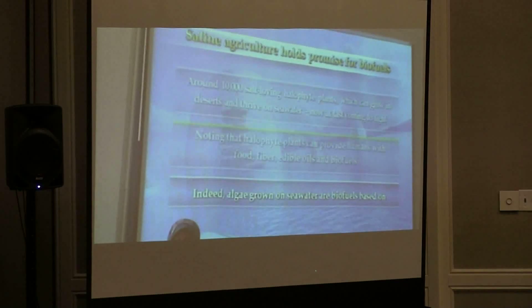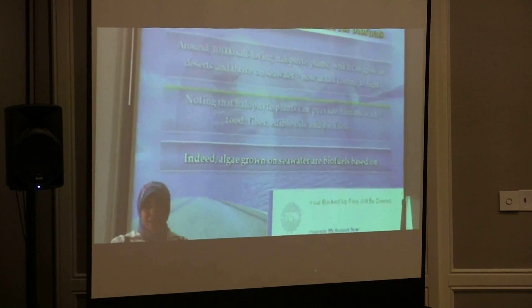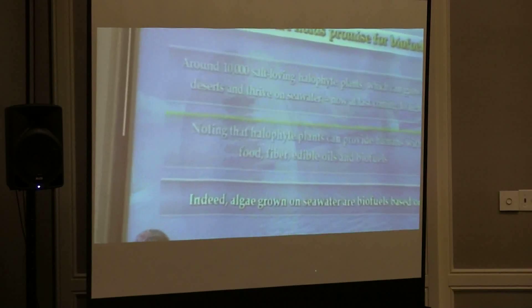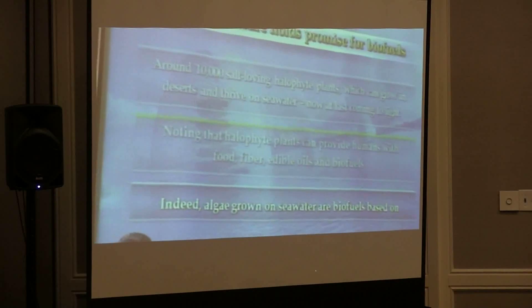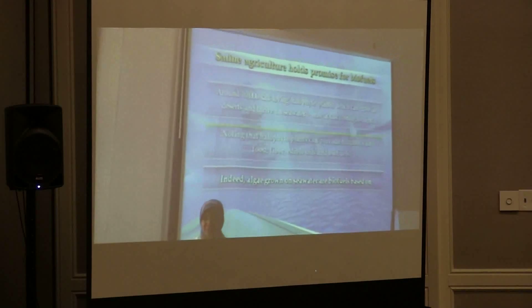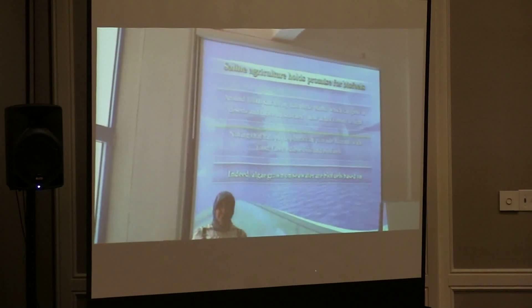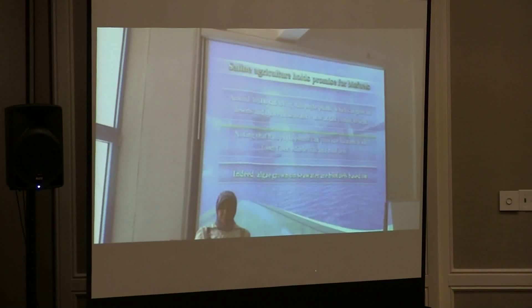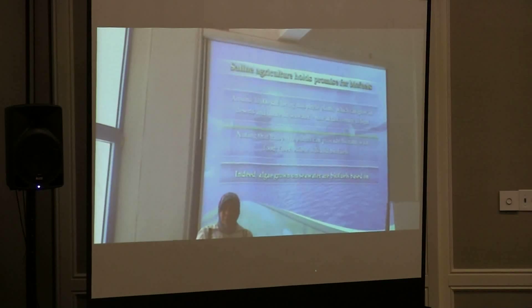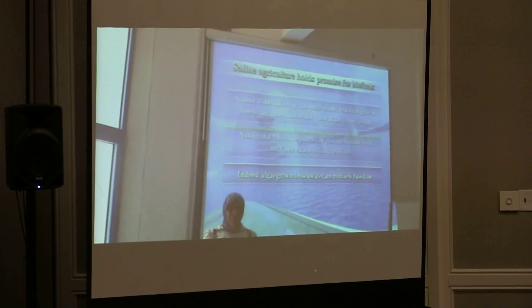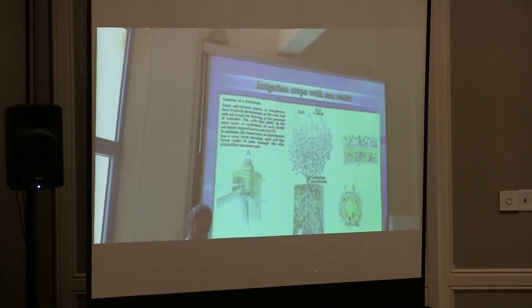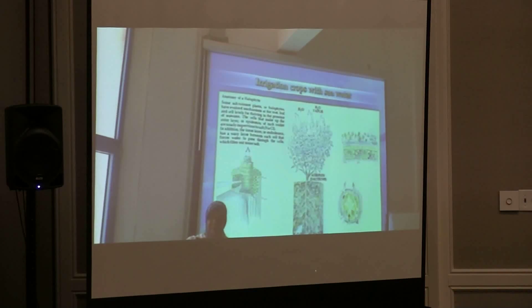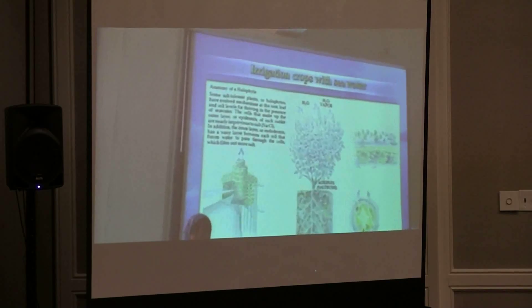It is promising. There are around 10,000 salt-loving halophyte plants which can grow on sea water and thrive on sea water. Coming to the next slide, we can see a sample anatomy of halophyte plants.